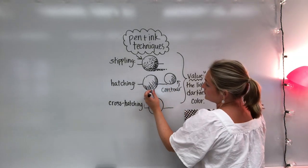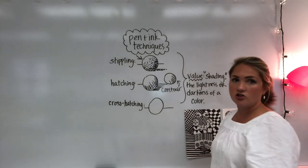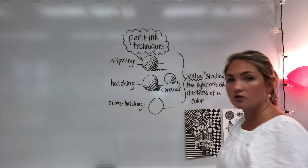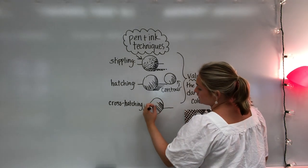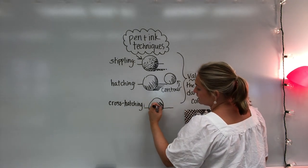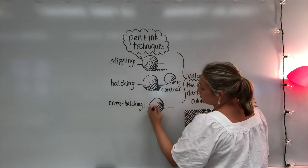So hatching is like I said just parallel lines and no matter what direction you put them in you can add shading to your shape. Cross hatching is exactly what it sounds like. I start with my hatching lines and you'll notice I don't make them all the same length and then you can crisscross them.